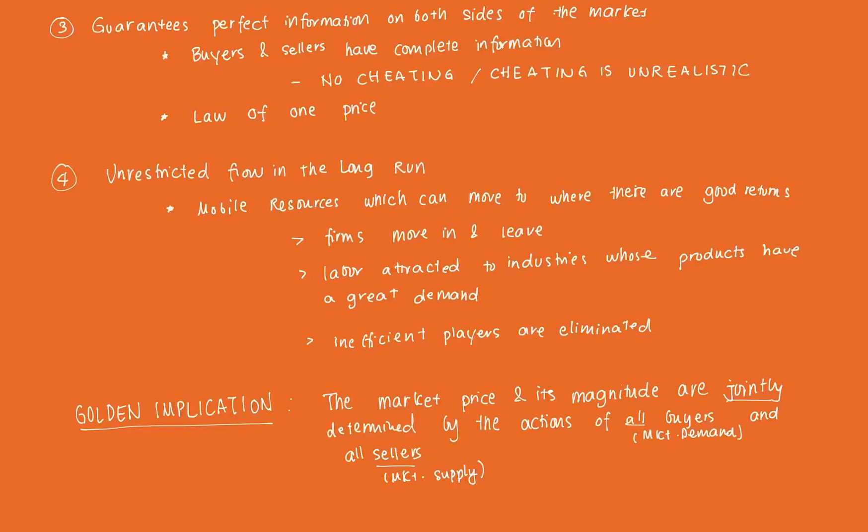Since the product being sold is homogeneous and everyone has perfect information, a single price must prevail in the competitive market. Firms in a perfectly competitive market will price match, because identical products must sell at identical prices. We call this the law of one price: identical products must sell at identical prices.